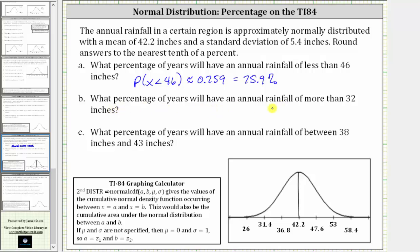Part B, what percentage of years will have an annual rainfall of more than 32 inches? We can indicate this as the probability or percentage that X is greater than 32. Looking at the graph, 32 is approximately here. Because we're looking for the percentage of years that will have an annual rainfall of more than 32 inches, we will now find the area to the right of 32, which is this area here.